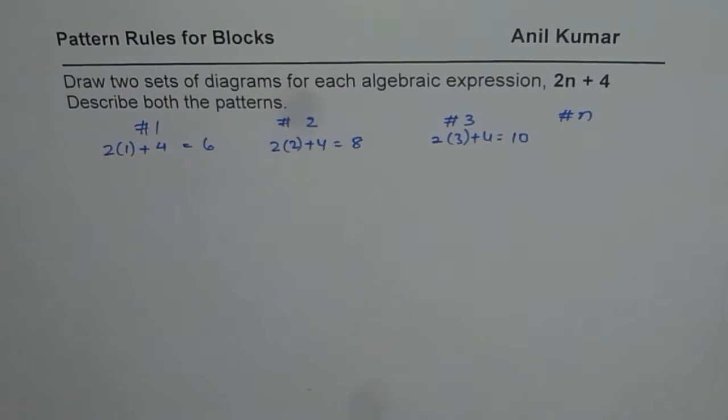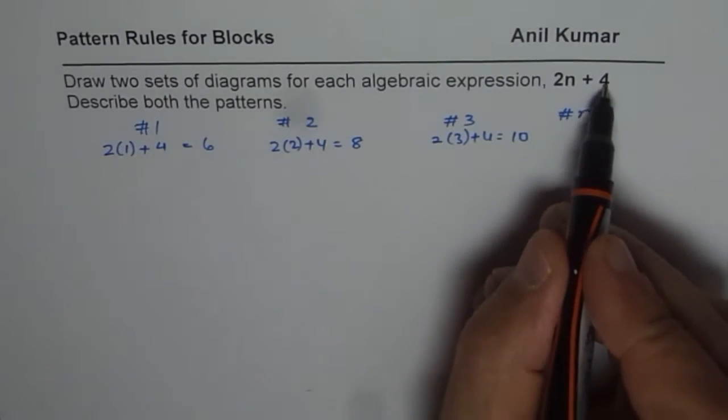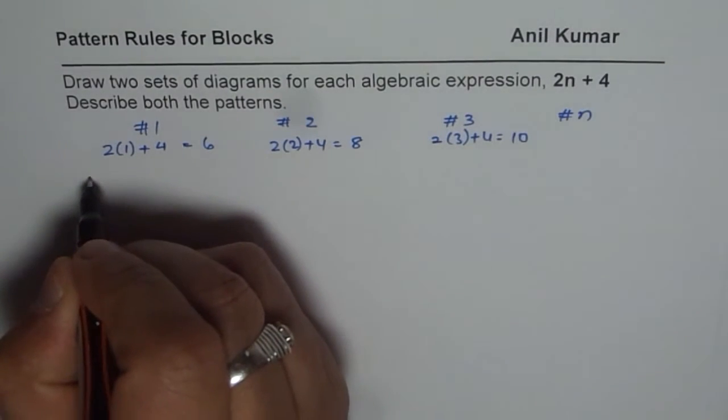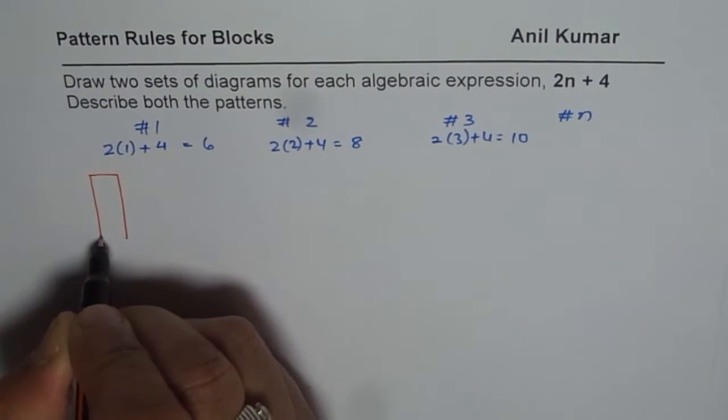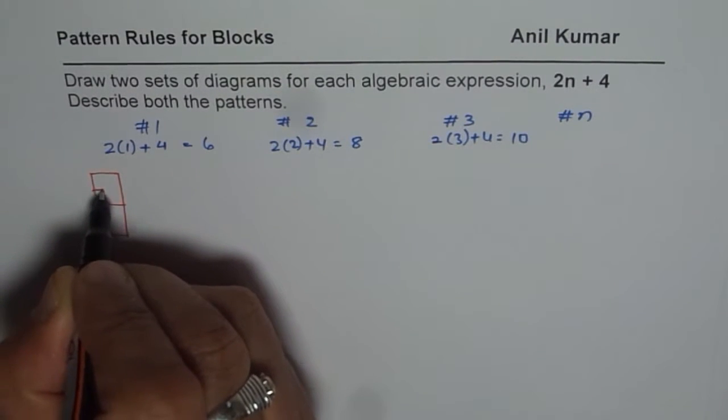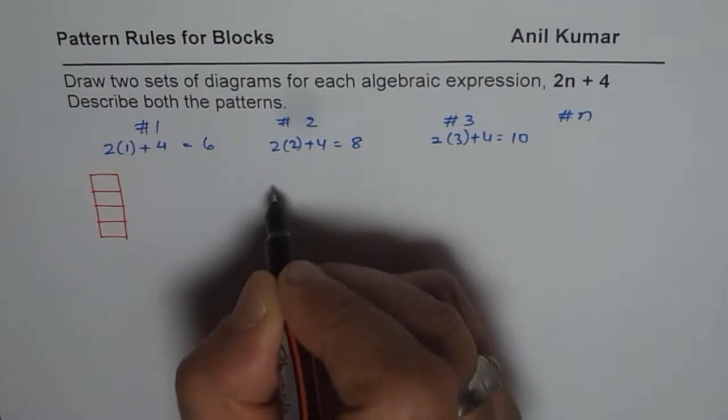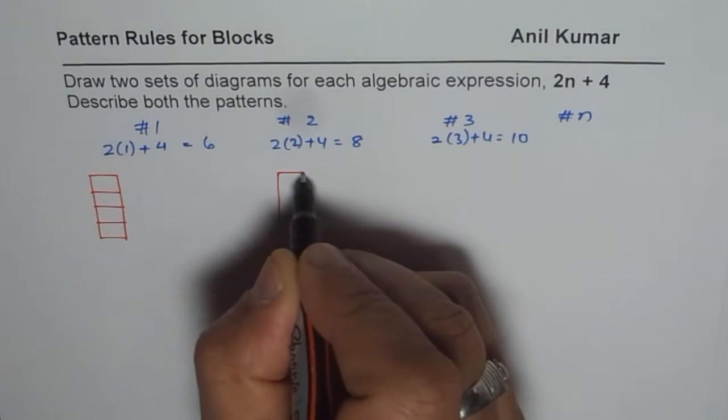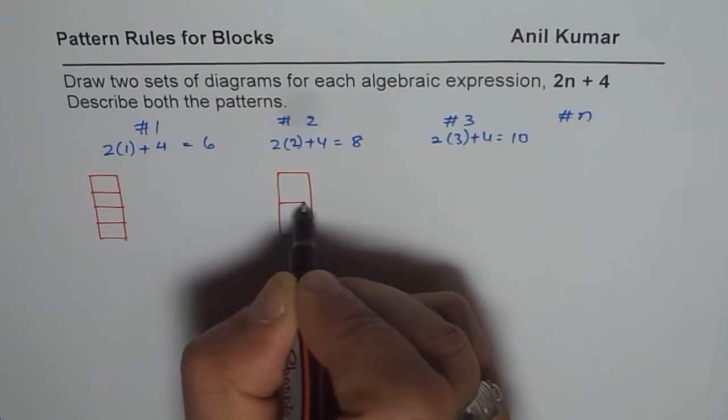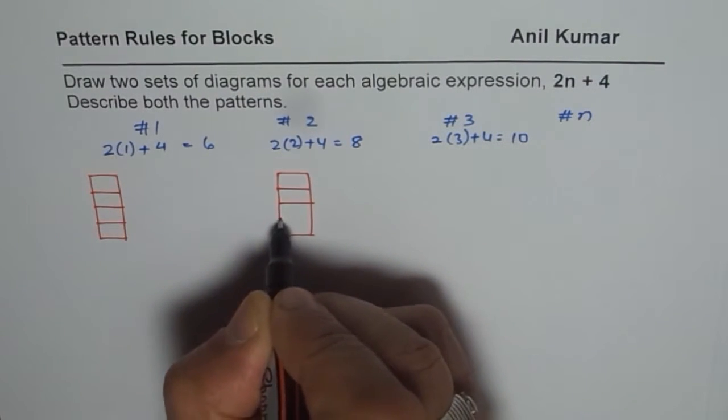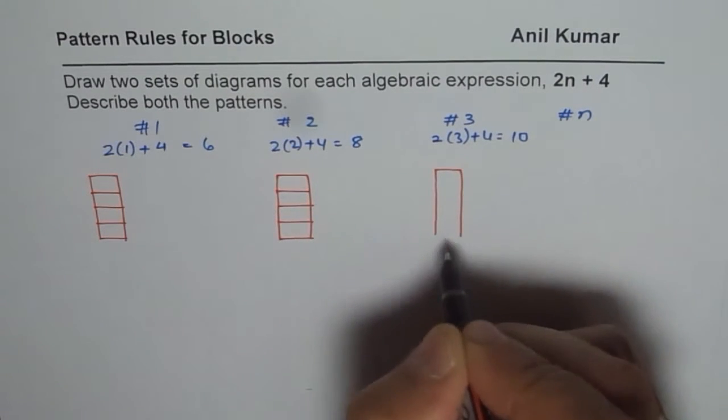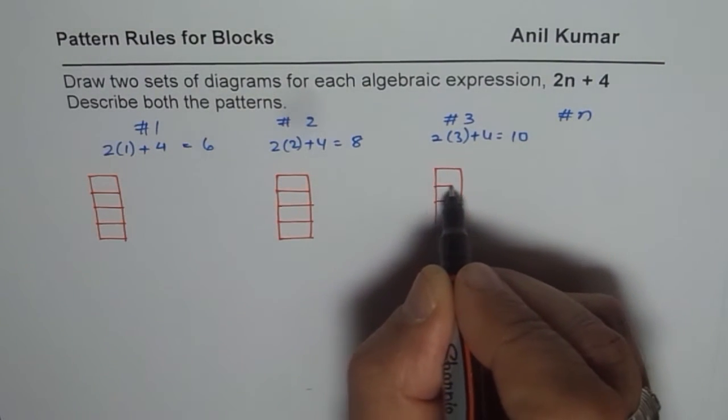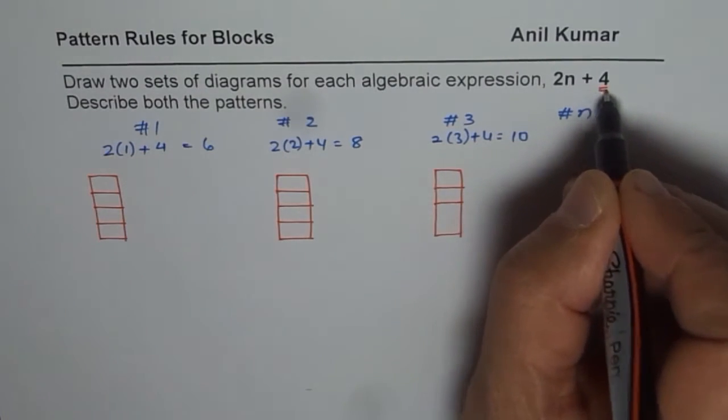From the equation, I think 4 is fixed. So let me fix a block of 4 here for all three patterns. This will be the fixed block for every pattern in the sequence.